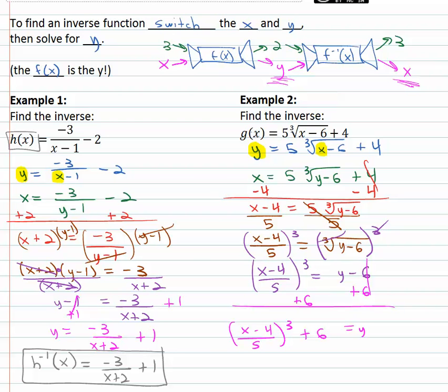Or using our notation of inverses, this is g of x, so we'll say g inverse of x is equal to this function, x minus 4 over 5 cubed plus 6.